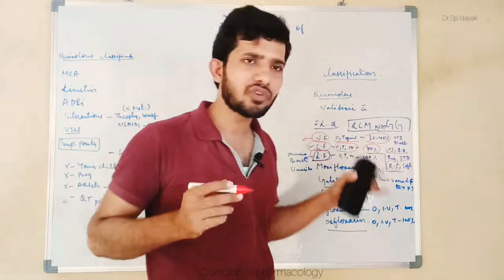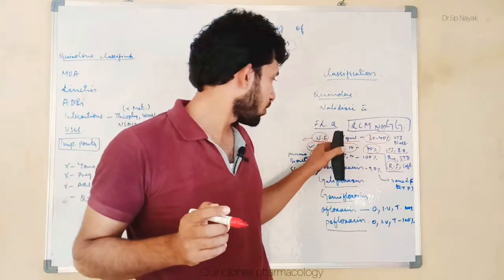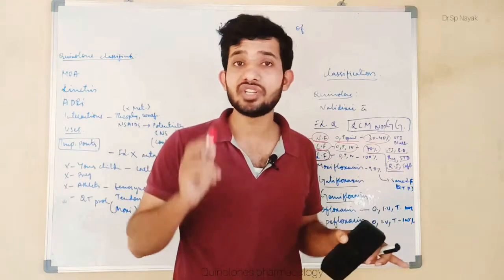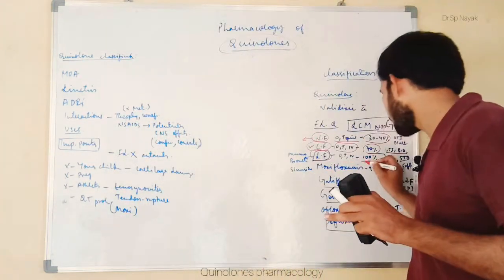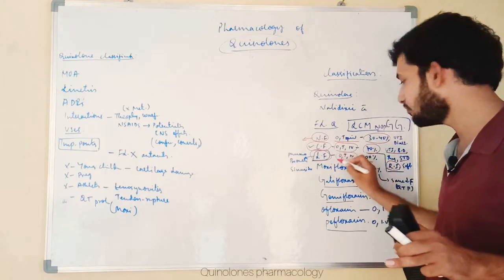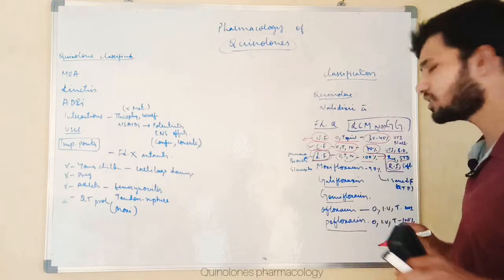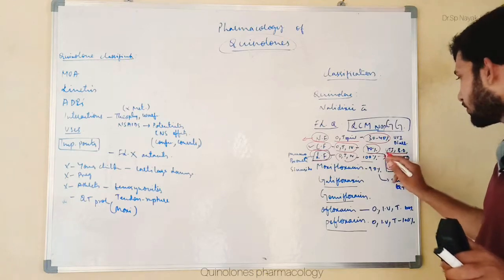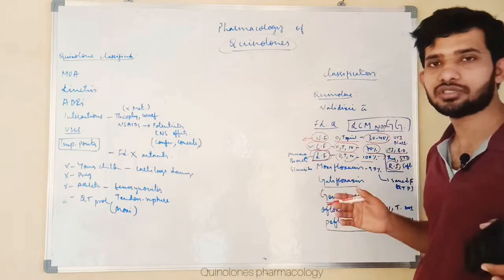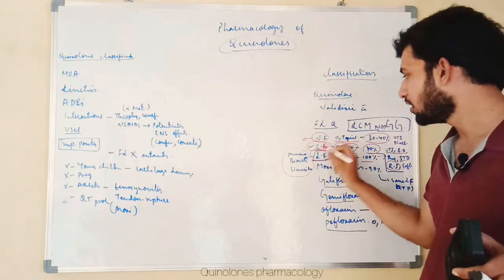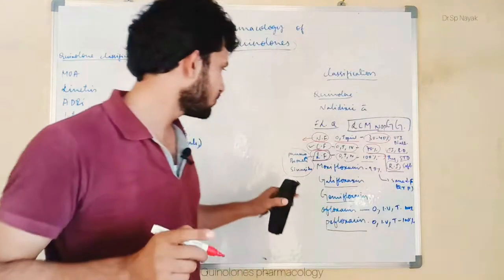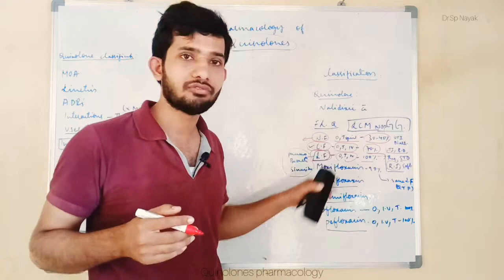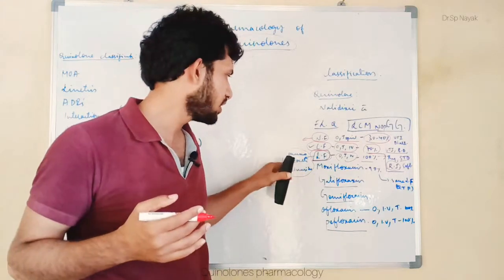Next drug is levofloxacin. Remember that norfloxacin bioavailability was 30 to 40% and ciprofloxacin was 70%, but levofloxacin bioavailability is 100%. It is available as oral tablet form and IV infusion. Levofloxacin has similar uses to ciprofloxacin, but importantly it is most commonly used for pneumonia, bronchitis, and sinusitis. Remember levofloxacin for upper and lower respiratory tract infections.